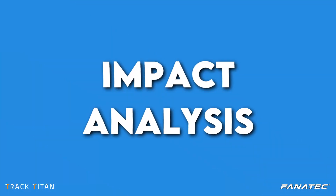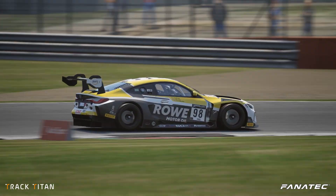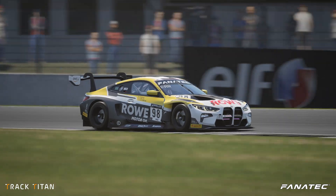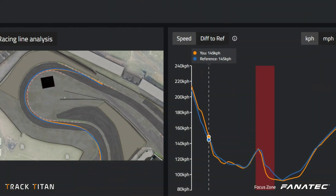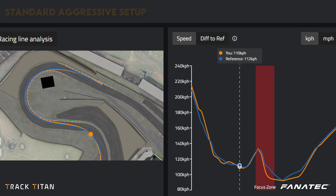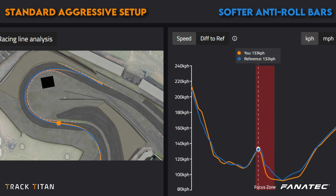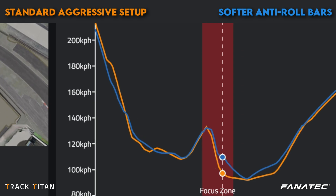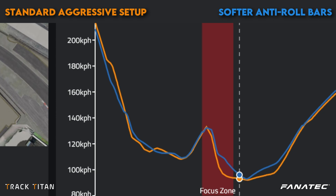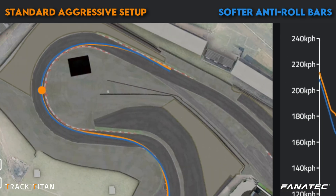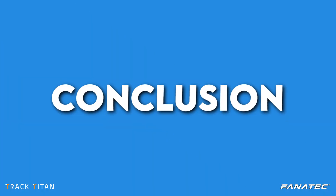We can beautifully see the effects of changing the ARB settings through Silverstone's Luffield corner when we compare two laps on the Track Titan platform. The orange driver is using the standard aggressive setup, while the blue driver has the anti-roll bars softened up a little bit. In the speed chart we can see that the blue driver maintains a higher minimum speed throughout the corner while having virtually the same racing line — a great example of the increased grip that softer anti-roll bars provide.